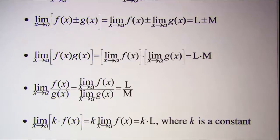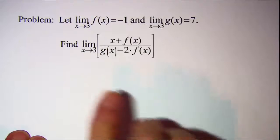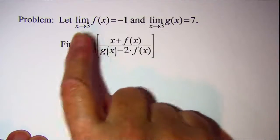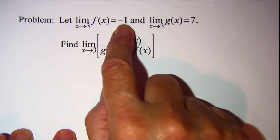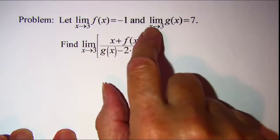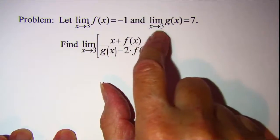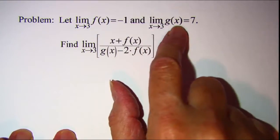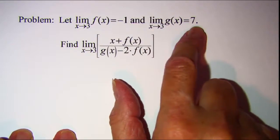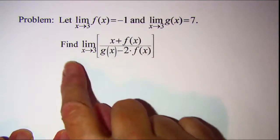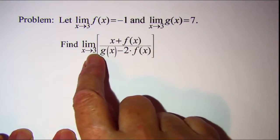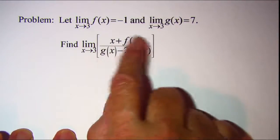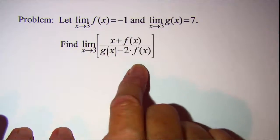So let's do a problem. Given the limit of f of x as x approaches 3 is equal to negative 1, and the limit as x approaches 3 of g of x is equal to 7, we are asked to find the limit as x approaches 3 of a given expression.